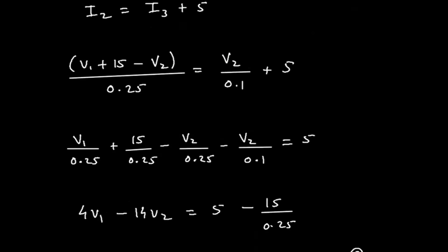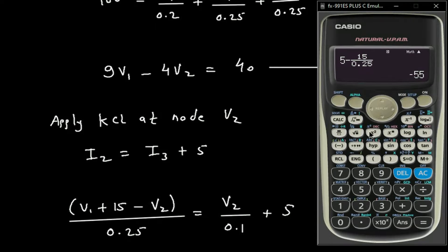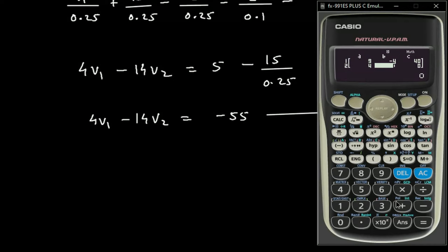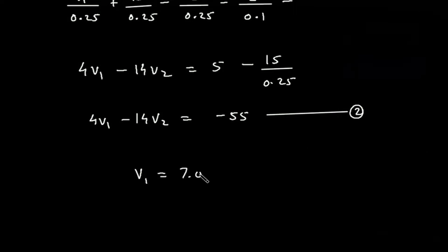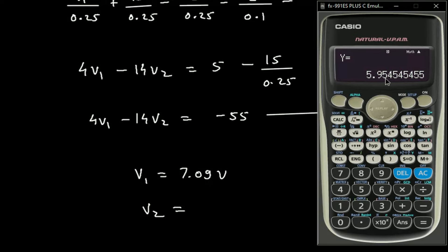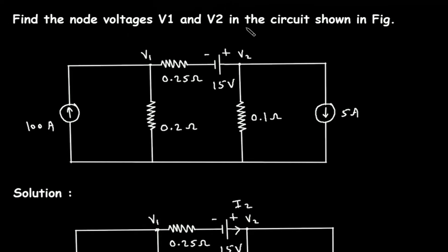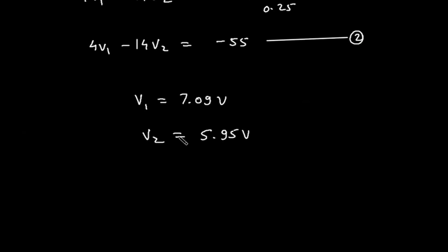Solving Equation 1 and Equation 2 simultaneously using a calculator — entering the coefficients: from Equation 1: 9, minus 4, 40; from Equation 2: 4, minus 14, minus 55 — we get V1 equals 7.09 volts and V2 equals 5.95 volts. These are the required node voltages V1 and V2.